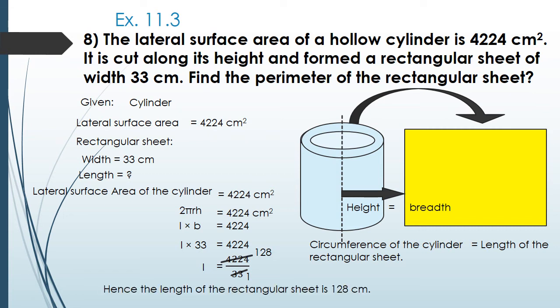To recap: we equated the height of the cylinder to the breadth of the rectangle, and the circumference of the cylinder to the length of the rectangular sheet. Then we applied the lateral surface area formula of the cylinder to find the length, which is 128 centimeters.